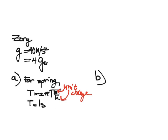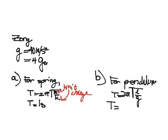For part B, it's asking about the pendulum. And we know for a pendulum that t is equal to 2π times square root of l over g. On Planet Zorg, we have t equals 2π times the square root of l over 4ge.